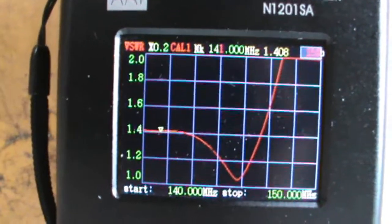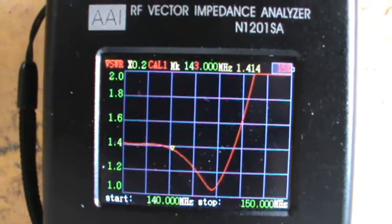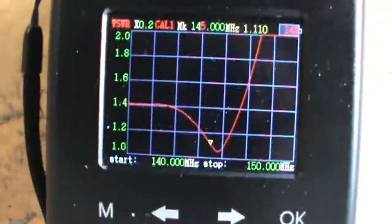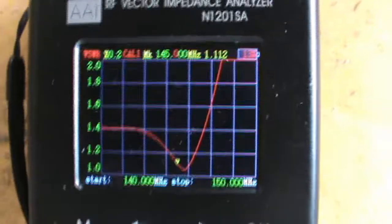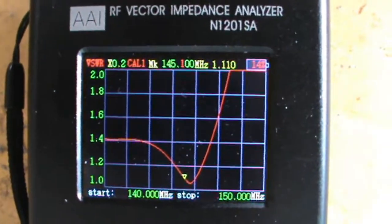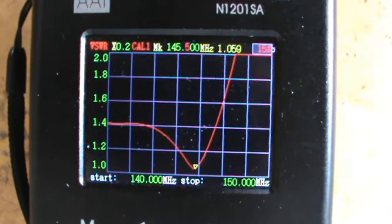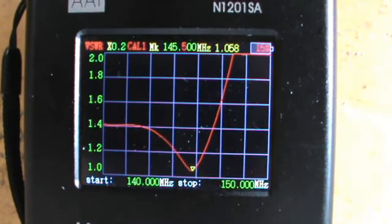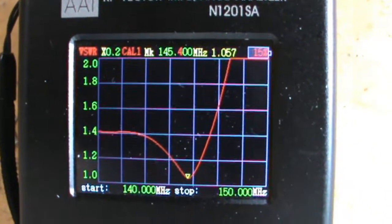Down to 140 on the low band. The exact center frequency is about 145.4 or 145.5 at 1.067 SWR.